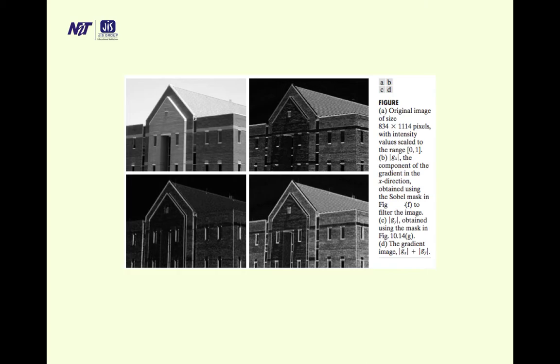The original image in the top-left row is of size 834×1114 pixels, scaled to 0–1 intensity. The corresponding pictures show: B is the original, C is the gradient along the x-axis, C is the gradient along the y-axis, and D is the gradient image |Gx| + |Gy|.